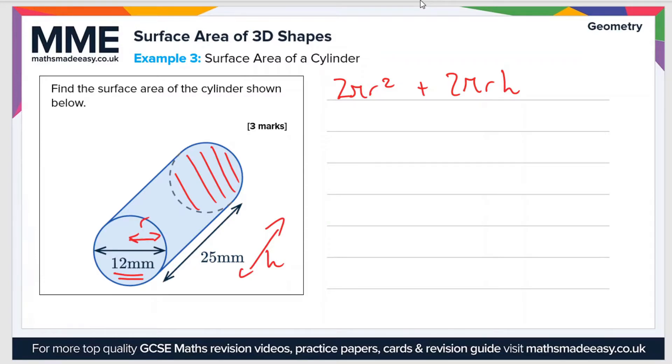If we put 6 and 25 into our formula for the area, then the area becomes 2π × 6² + 2π × 6 × 25. If you put those into a calculator, you should get 72π + 300π.